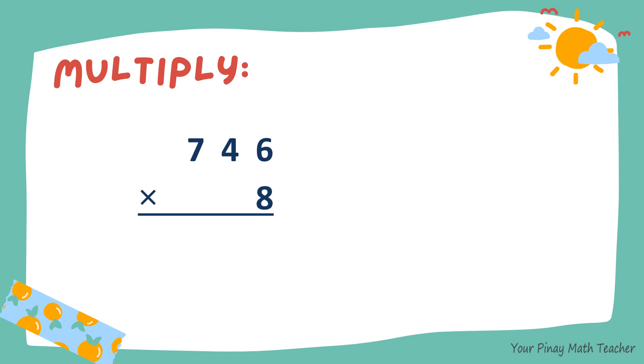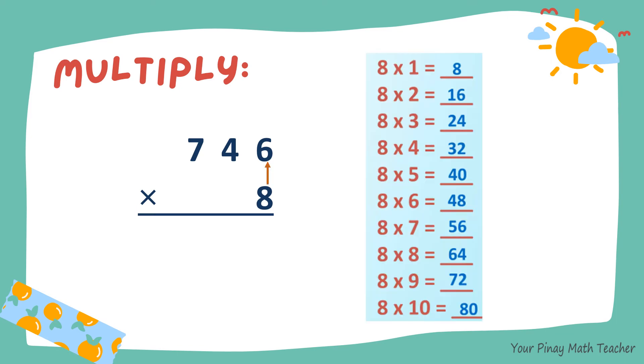Let's multiply 746 by 8. 8 times 6 is 48. 8 carry 4. 8 times 4, 32. Plus 4, 36. 8 times 7, 56. Plus 3, 59. 5,968 is the product of 746 and 8.